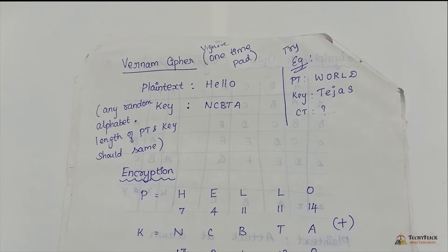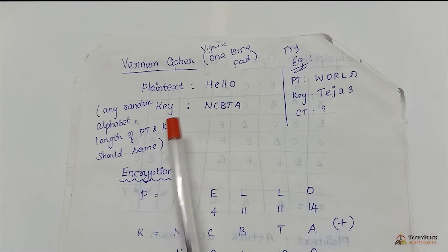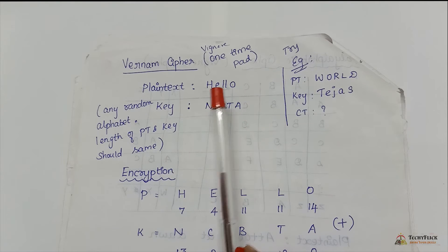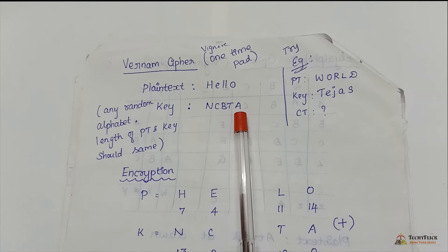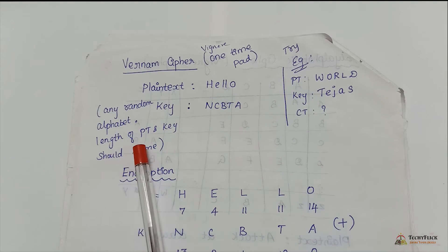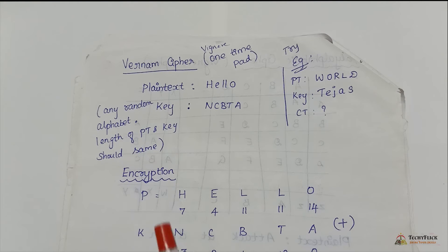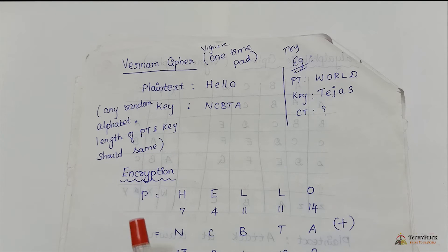Another example of a polyalphabetic cipher is the Vernam cipher, also called the one-time pad. The plain text is 'hello' and the key is 'NCBT' — any random alphabet. The key length must be the same as the plain text length. That is the difference from the Vigenère cipher, where the key is repeated; here the length must match.